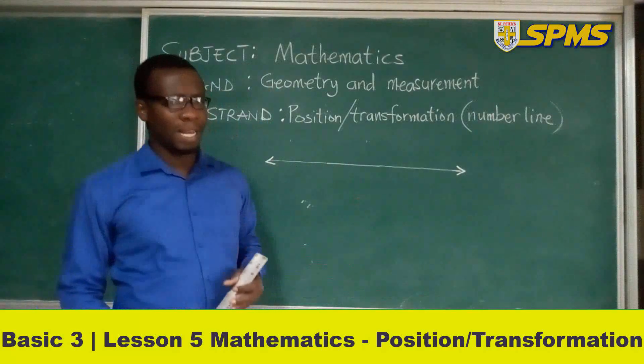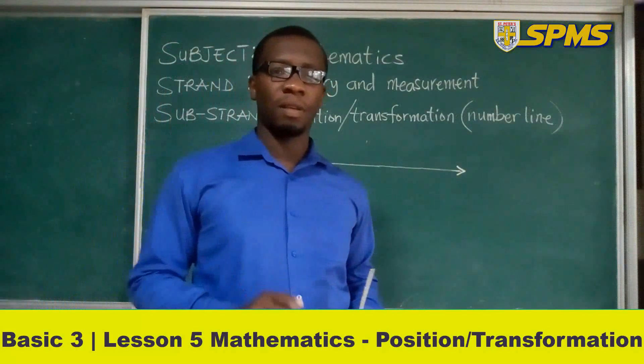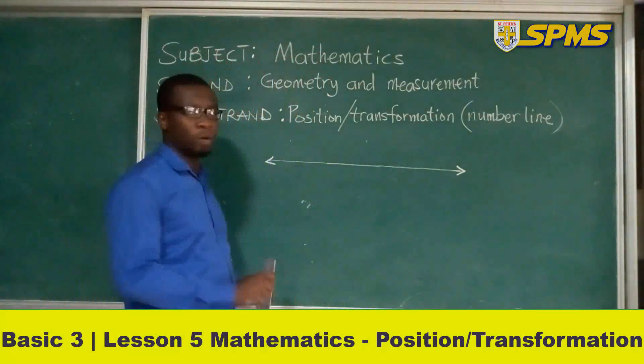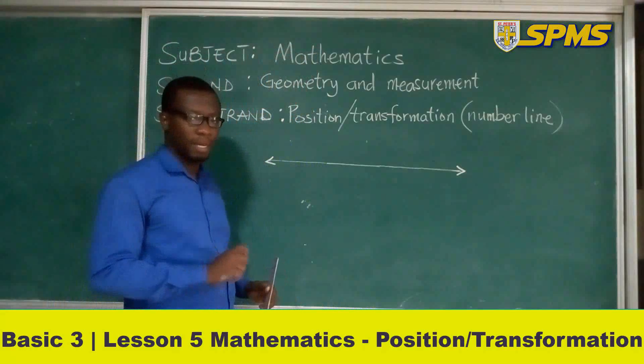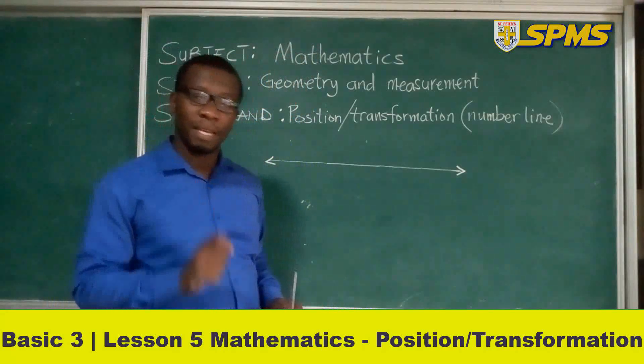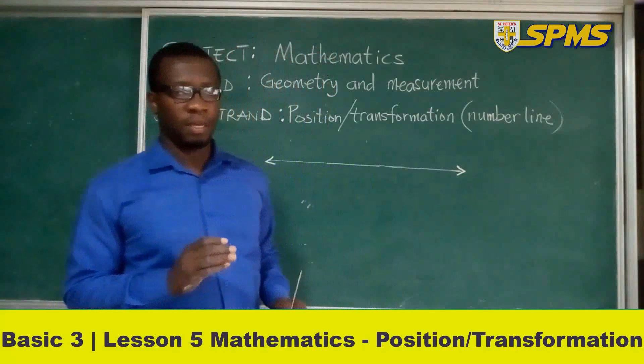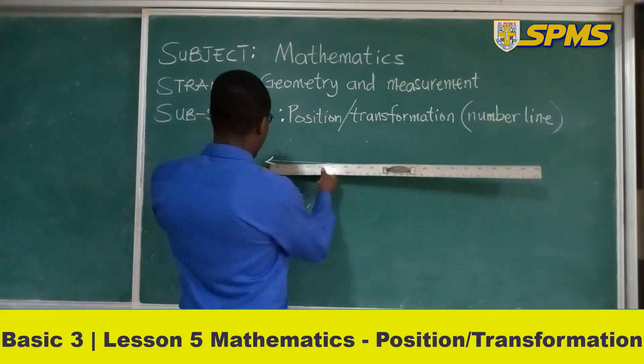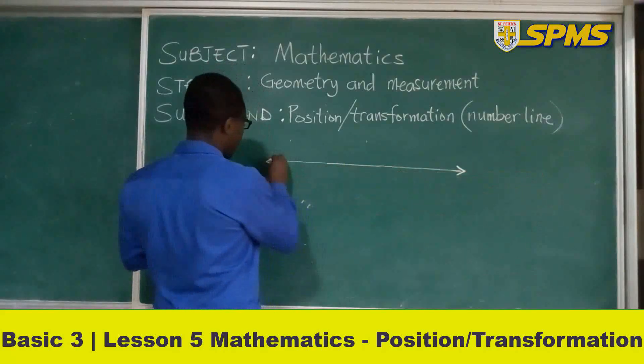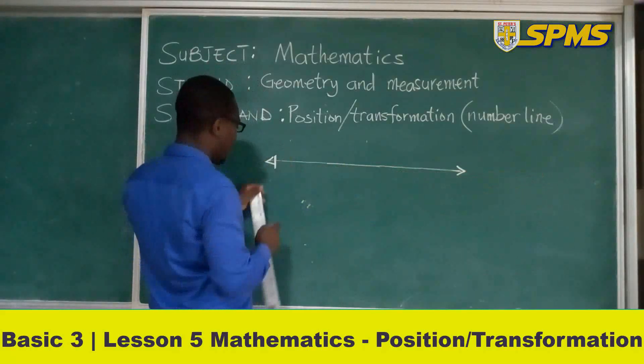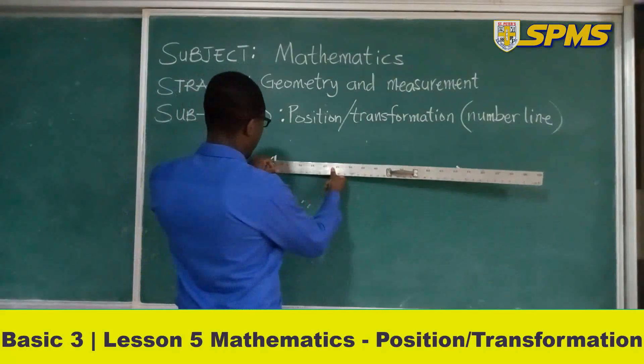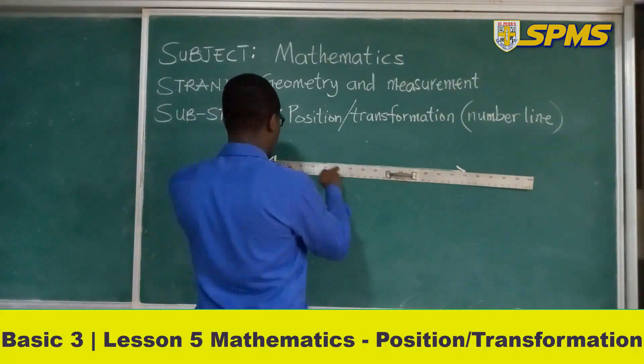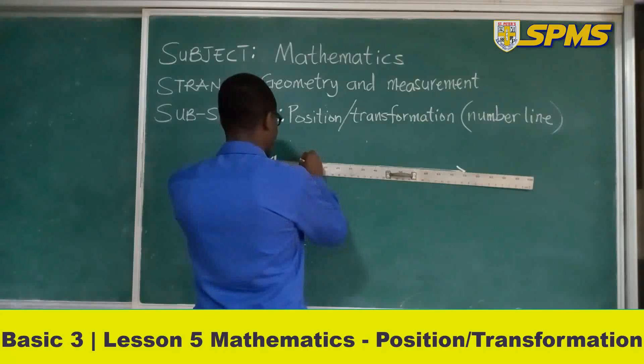In drawing a number line, you need an interval for your tick marks. The interval must be the same across. So on my number line, I am going to have a measurement of an interval of 10 cm to indicate my tick marks.